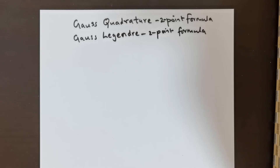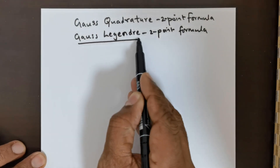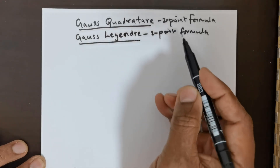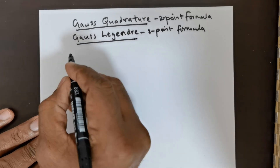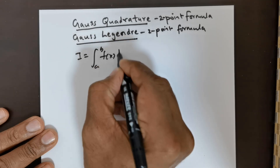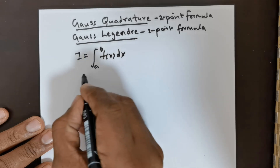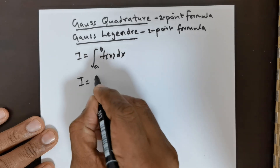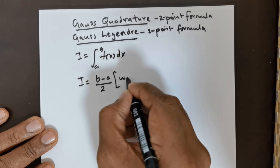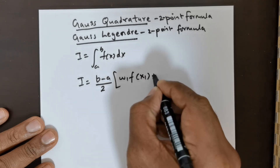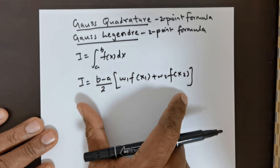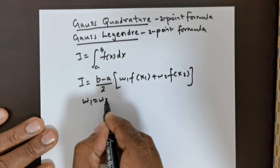So having mentioned that, let me introduce to you this powerful formula. This is called the Gauss-Legendre two-point formula, also known as the Gauss-Quadrature two-point formula. The formula is written as follows: suppose you have an integral i = integral from a to b of f(x) dx. Then we rewrite this as i = (b−a)/2 multiplied with w1·f(x1) + w2·f(x2). This is the Gauss-Quadrature two-point formula, where w1 = w2 = 1.